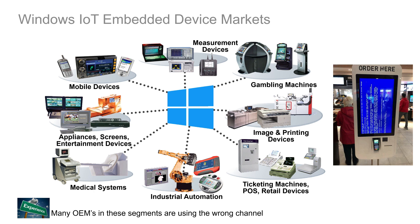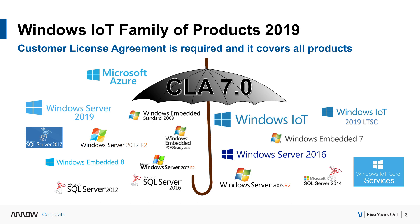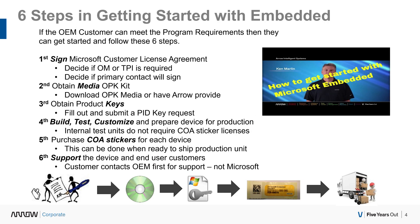Windows 10 IOT Enterprise LTSC 2019 requires that you sign an agreement — it's a no-cost, no-commitment, no minimum purchase agreement where you basically say: 'I'm only going to use this product for an appliance, not for a general use computer.' It's called a Customer License Agreement version 7.0, and it covers all of these products. By signing this one agreement, you get access to all of these products that you can begin testing and playing with.